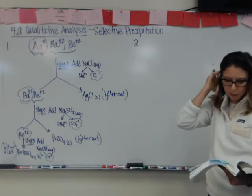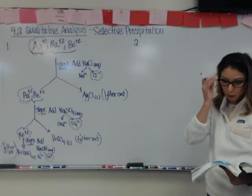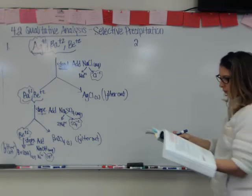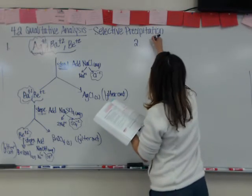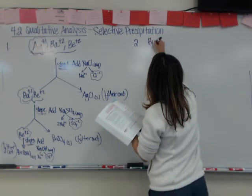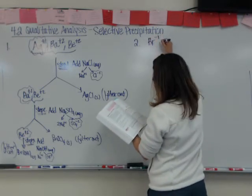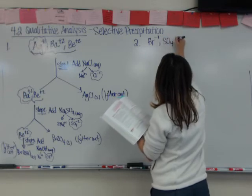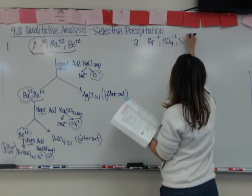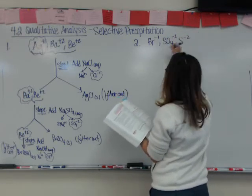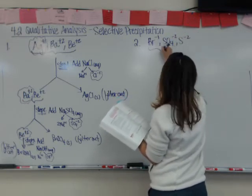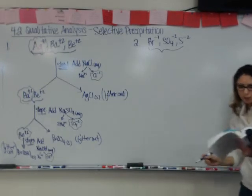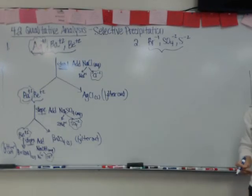Now let's do number two. Number two has a bromide ion, a sulfate ion, and a sulfide ion. Note that those were cations in problem one — these are anions, so this is a little bit different.